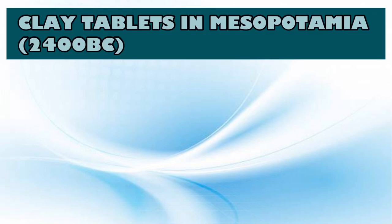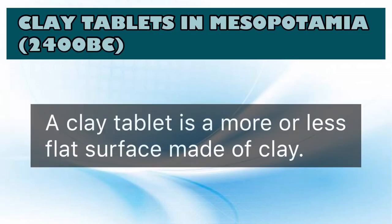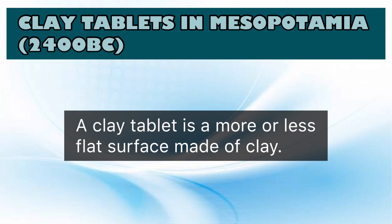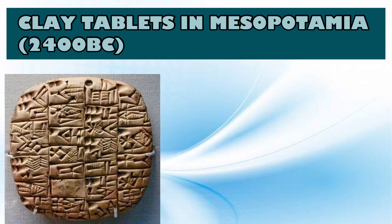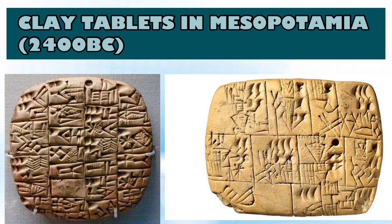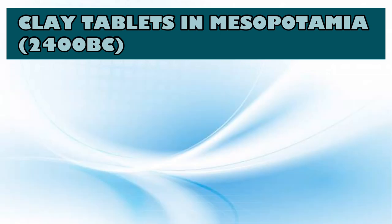Next, we have the clay tablets in Mesopotamia. In the ancient Near East, clay tablets were used as a writing medium, especially for writing in cuneiform. Cuneiform characters were imprinted on a wet clay tablet with a stylus often made of reed — and a reed is a pen. This is an example of a cuneiform alphabet.